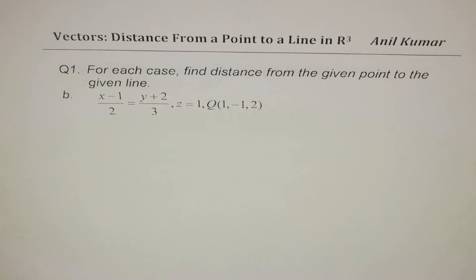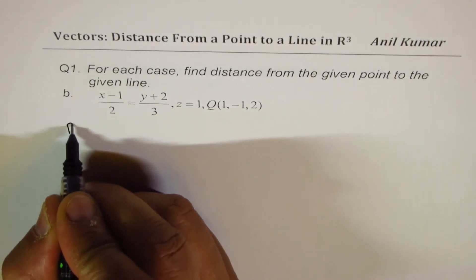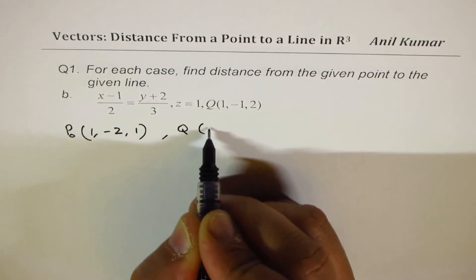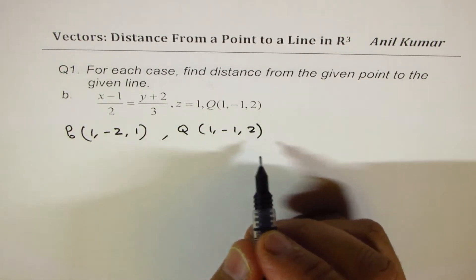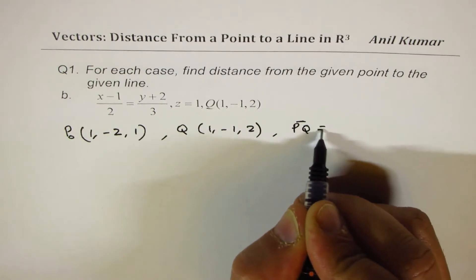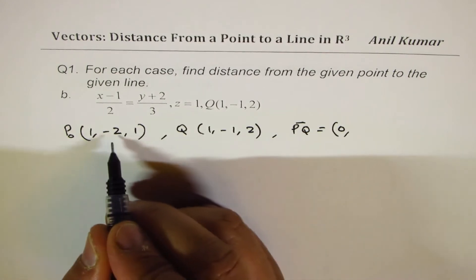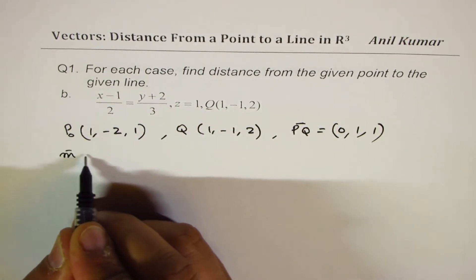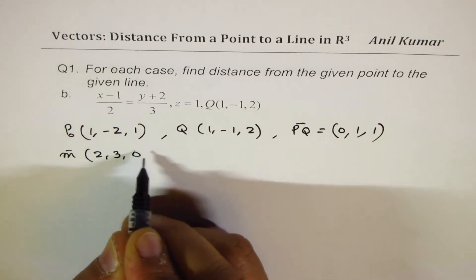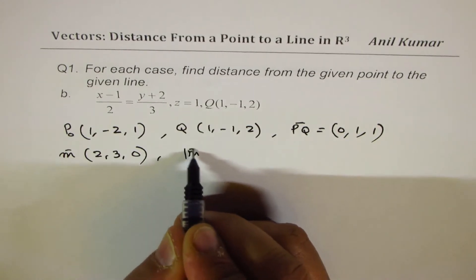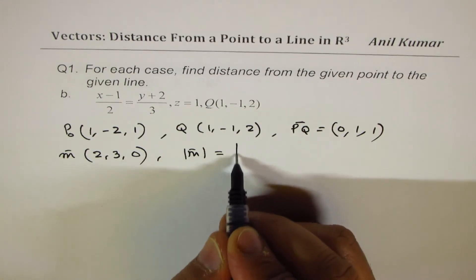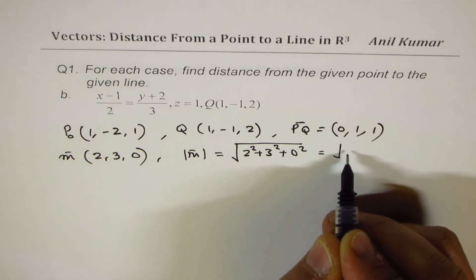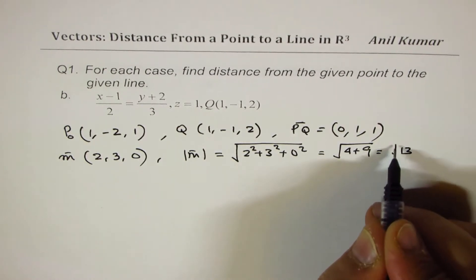Now let's do part B. In this case, the point on the line P0 is (1, minus 2, 1), since z equals 1. The point Q given to us is (1, minus 1, 2). Therefore, vector P0Q equals (1 minus 1, minus 1 minus (minus 2), 2 minus 1), which is (0, 1, 1). The direction vector M is (2, 3, 0), and its magnitude is the square root of 4 plus 9 plus 0, which is the square root of 13.